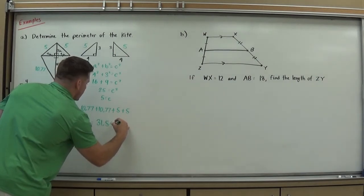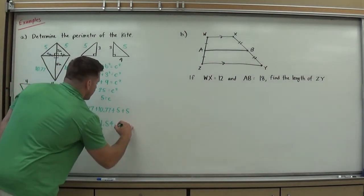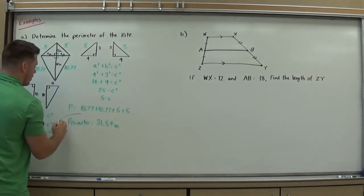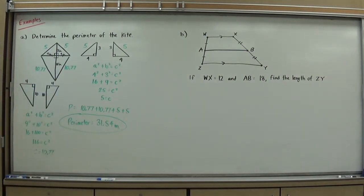And any time I'm talking about a length, I need to use the correct units, or an area to use the correct units. Units are in inches, perimeter is a length unit, so no units squared, it's just first dimensional units, so thirty one point five four inches.